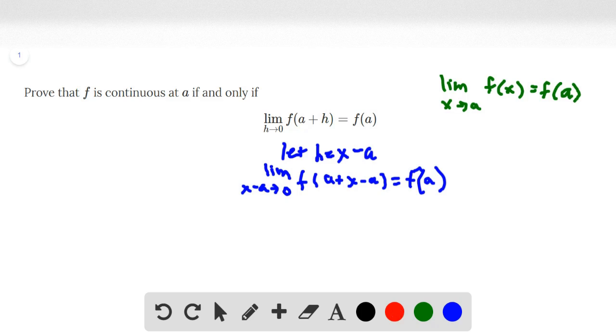And if we do some modifications here, a minus a is 0. And then here we can add a to both sides of this arrow. So this would be the same as the limit as x approaches a, with the function f(x) equals f(a).